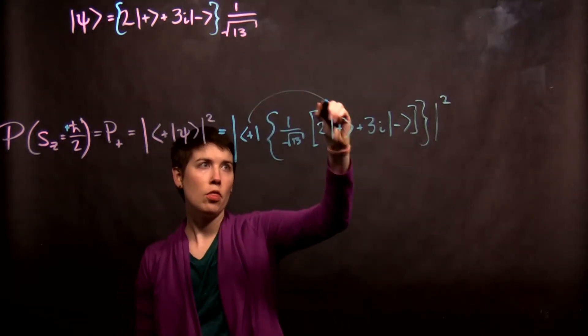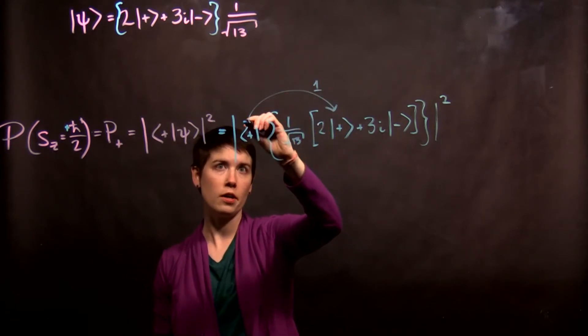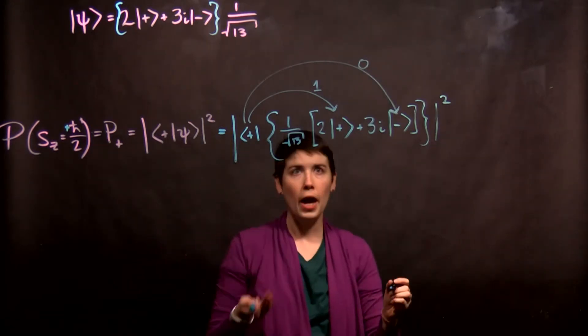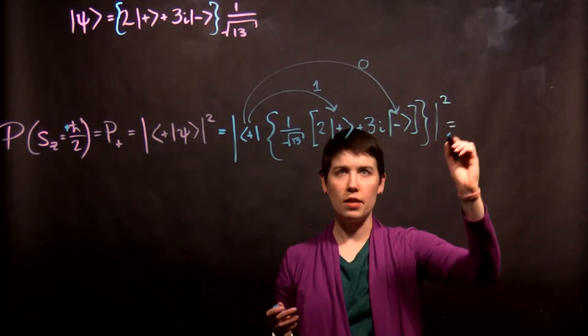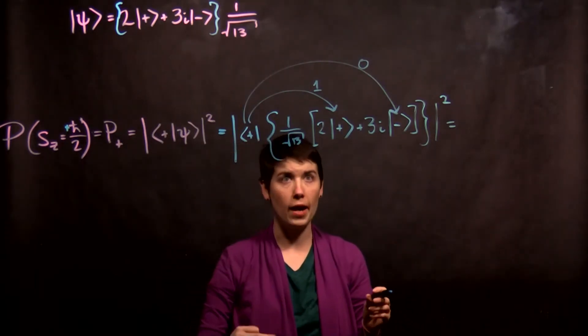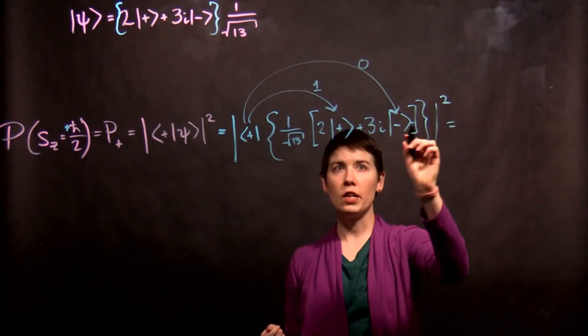Now when this happens, when we have our plus with our plus, that's going to be equal to 1. But when we have plus with the minus, that's going to be equal to 0. Those are orthogonal. And so we can then simplify this. If you're not comfortable with this yet, feel free to really show out multiple steps of work. But because this second term is 0...